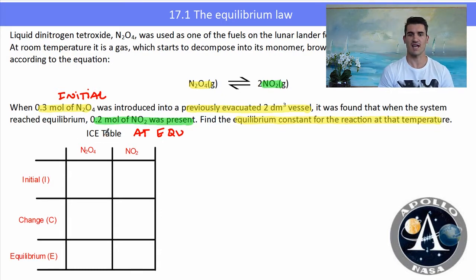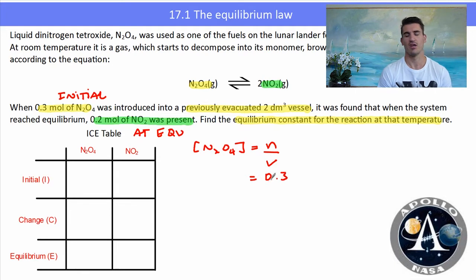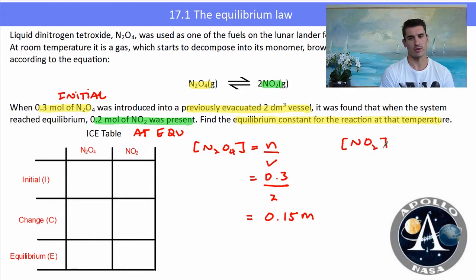We have to use this table which I've designed, called an ICE table. We can work with the initial concentrations, the changing concentrations, and then the equilibrium concentrations. Before we use this table, we need everything in the same units. I'm going to change N₂O₄ into a concentration (mole over volume), then also work out the concentration of NO₂. Here's my initial concentration of N₂O₄, and my equilibrium concentration of NO₂ would be 0.1 M.